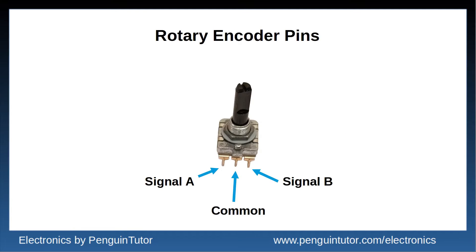Encoders typically have three pins: a common signal and then two others referred to as signal A and B, or sometimes clock and data. Some encoders have built-in pull-up resistors so they may have more pins such as a five-volt power pin. These are standard rotary encoders mounted on a small PCB — essentially they still work in the same way.